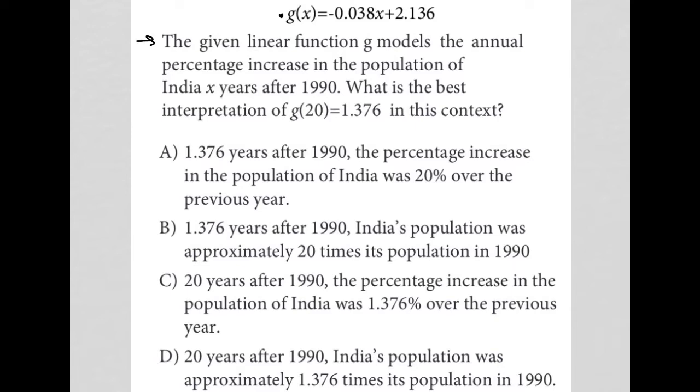I've learned by habit that anytime I see this term linear function, I am automatically going to think of y equals mx plus b and relate that to the function that's been provided by the question. For us, this negative 0.038 would be the m and the 2.136 would be the b. Again, m representing slope and b representing the y-intercept.